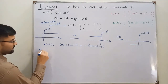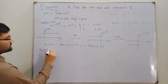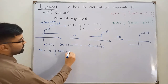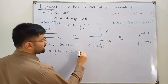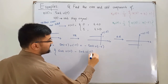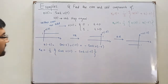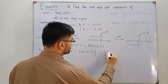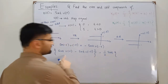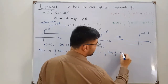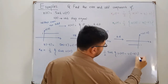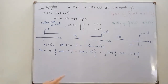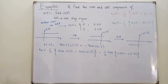For the even component, x_e(t) equals one-half of x(t) plus x(-t), which is one-half of sine(t)·u(t) plus negative sine(t)·u(-t). Taking sine(t) as common, the even component is one-half times sine(t) times the quantity u(t) minus u(-t). Let this be the mathematical representation; we will draw it graphically after discussing x_o(t).